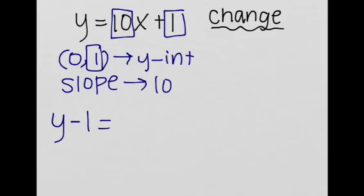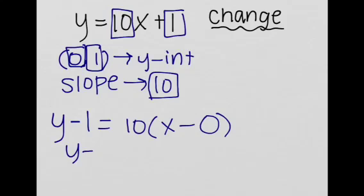is equal to the slope, which is 10, times x minus x1, which is 0. So we basically are left with y minus 1 is equal to 10x. And as you realize, this makes sense, because all I'd have to have done is subtract 1 from both sides.